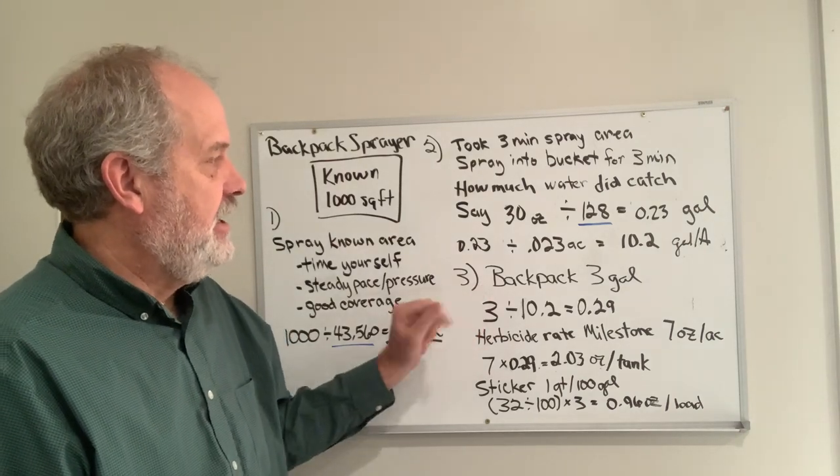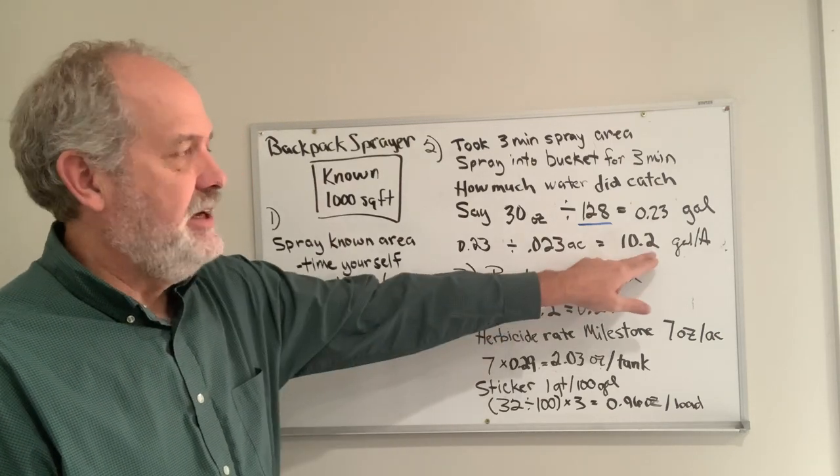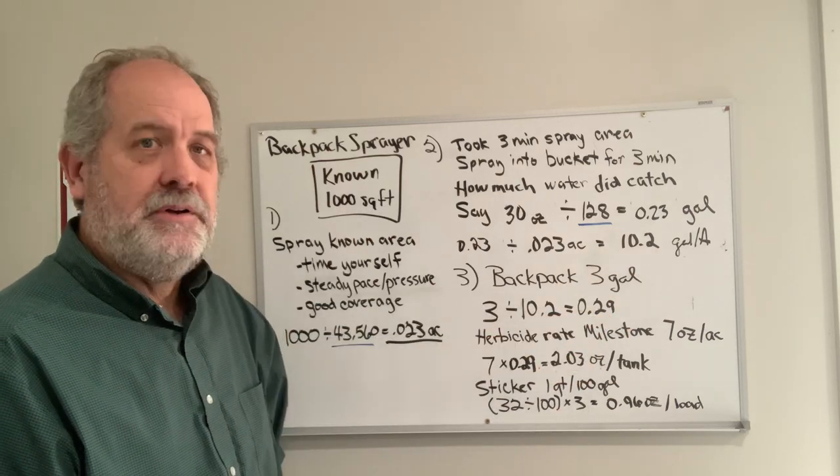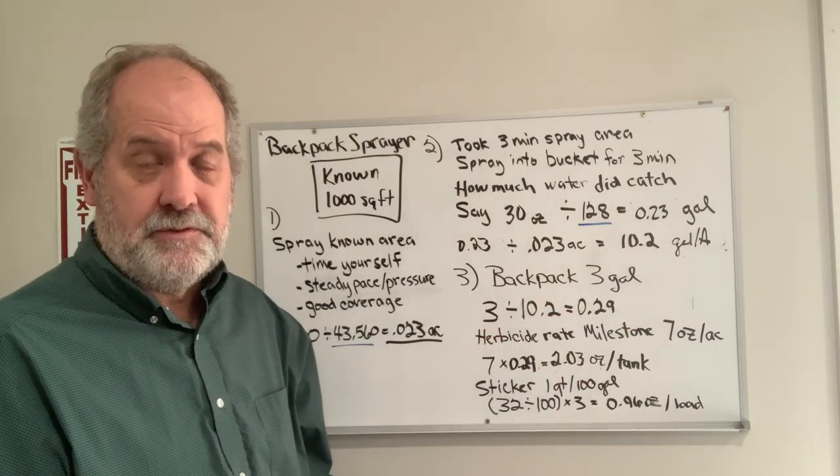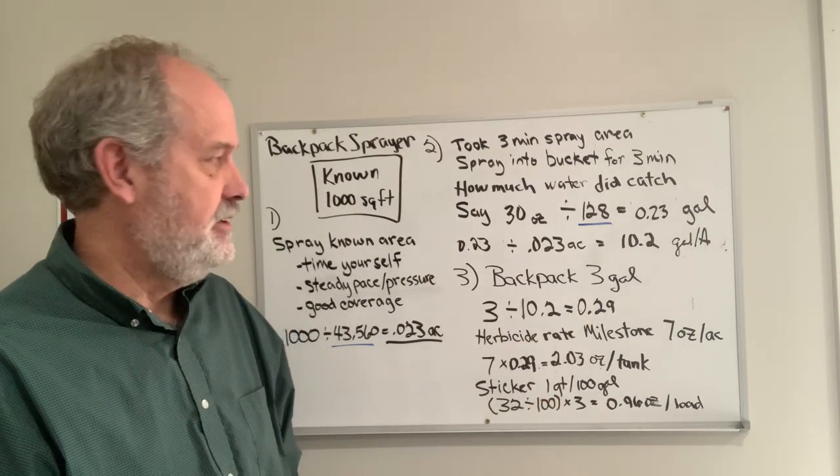A backpack is usually 3 to 5 gallons. Let's use 3 gallons. So 3 divided by your 10.2 gallons per acre tells you that if you were to spray pesticide over a full acre with that backpack, you would cover 0.29 acres.